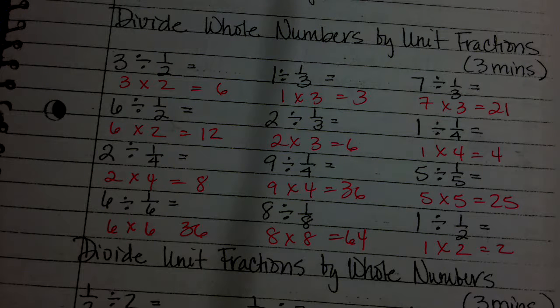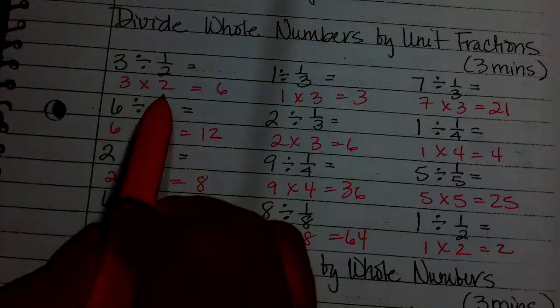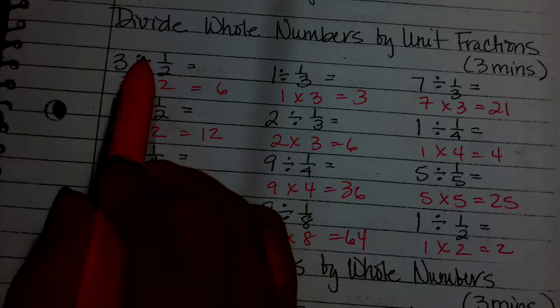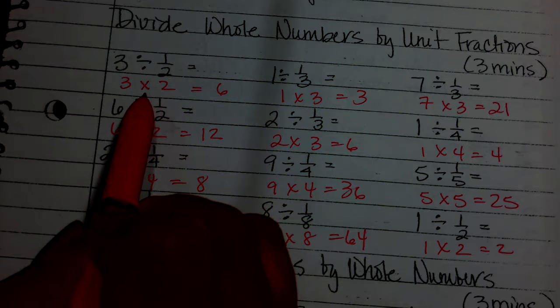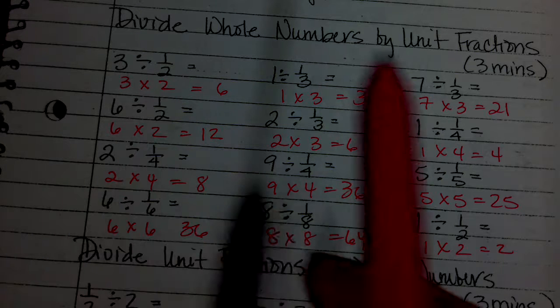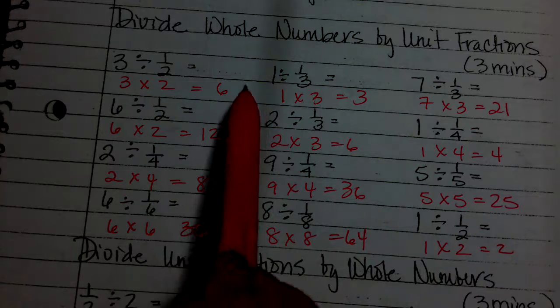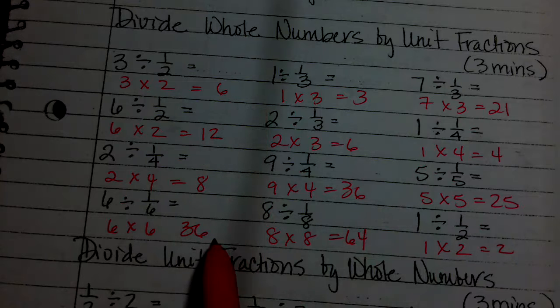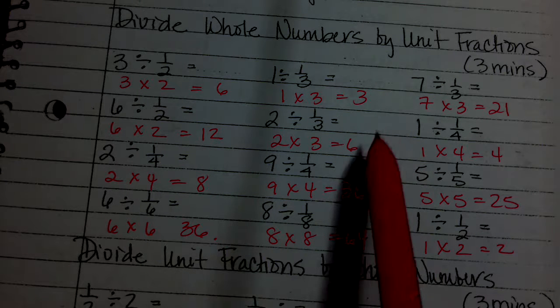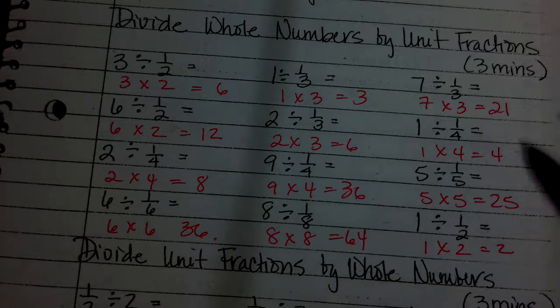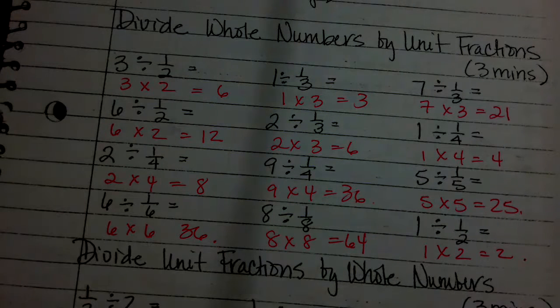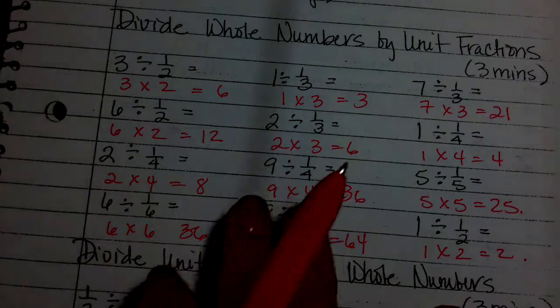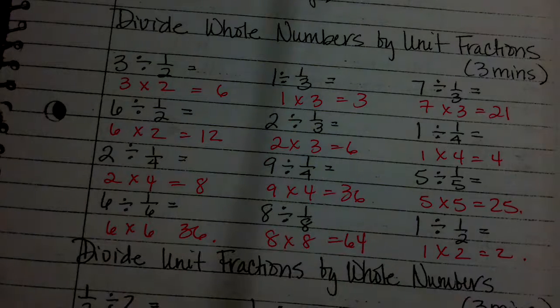All right, how did you do? So this becomes 3 × 2 because this division sign inverts and you're multiplying by the reciprocal of 1/2 which is 2. So we have 6, 12, 8, 36, 36, 64, 21, 4, 25, 2. All right, so this is a review of lesson 25.